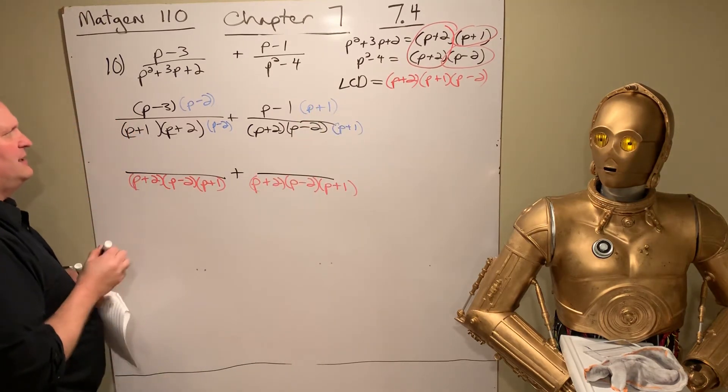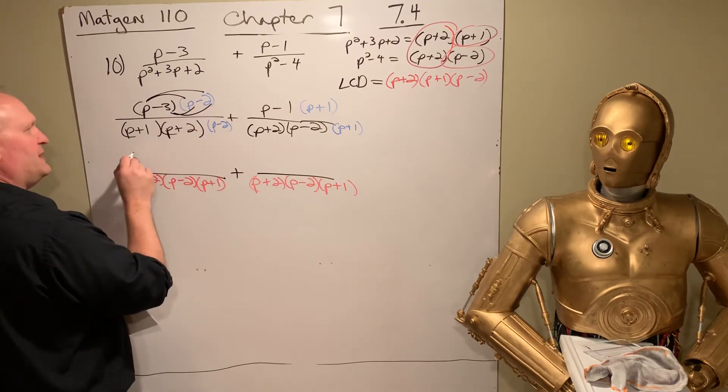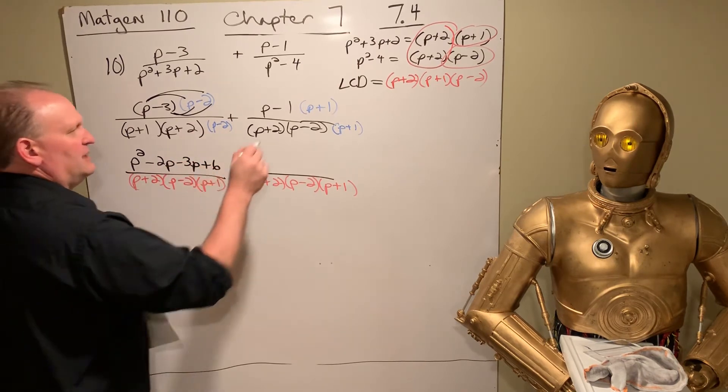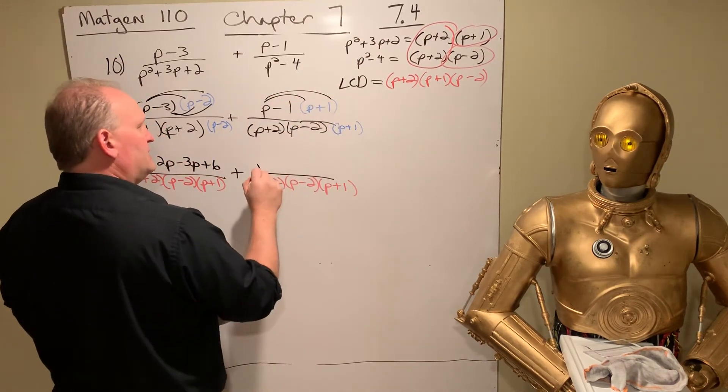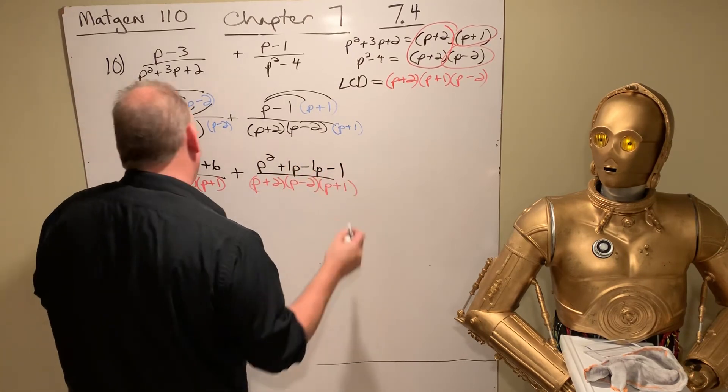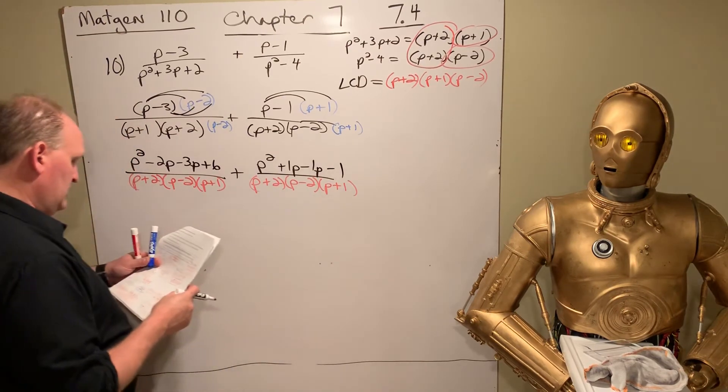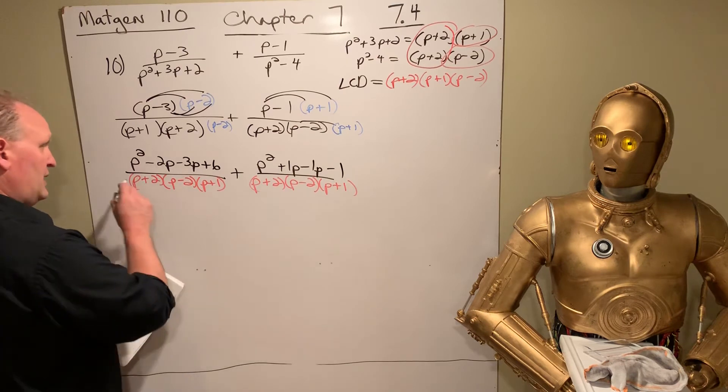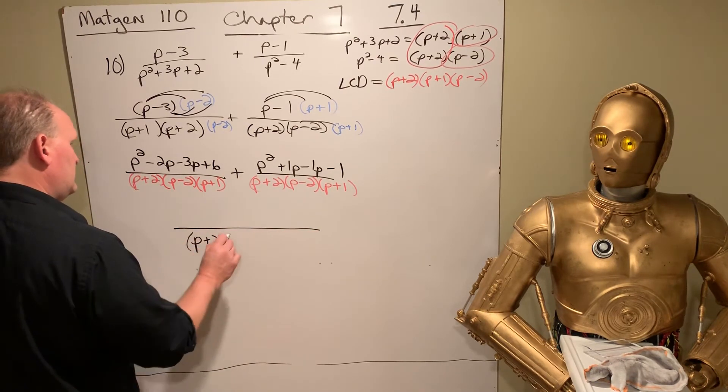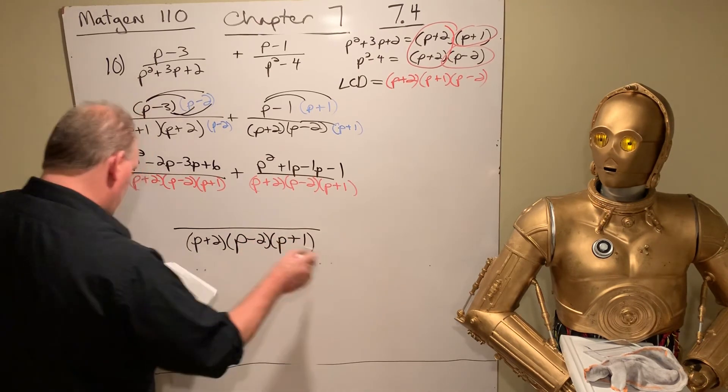So we do the distributive property. So on the top, we get P squared minus 2P minus 3P plus 6. Here we get P squared plus 1P minus 1P minus 1. And so then when we combine up all the like terms, whew, there's a lot here. We got all of this, P plus 2, P minus 2, P plus 1 on the bottom. So that is our denominator.